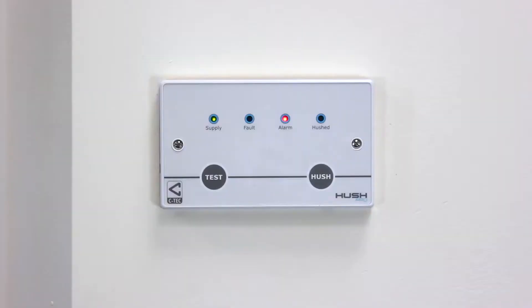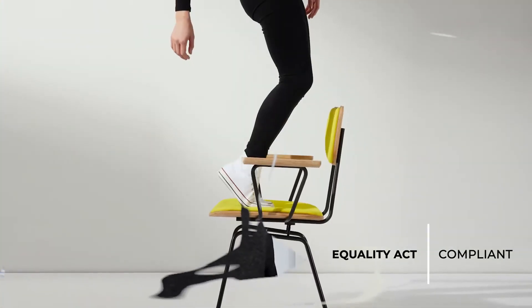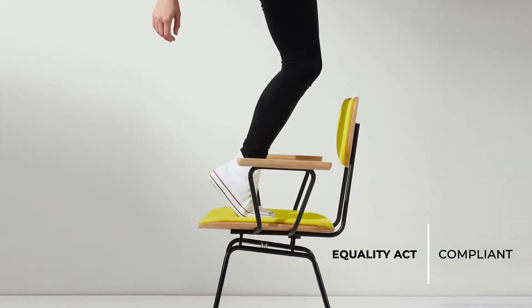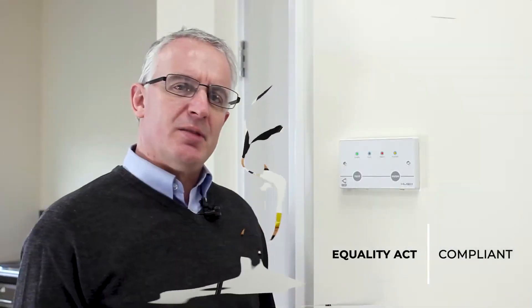In a Fire Level 1 condition, which is likely to be a false alarm, the dwelling sounders will sound and the building occupant can go to the controller and press the Hush button to silence the alarm while they investigate. As you can see, you can press the Hush button while standing at floor level without having to climb on a chair or a set of ladders. This means the system is safer and fully compliant with the Equality Act.